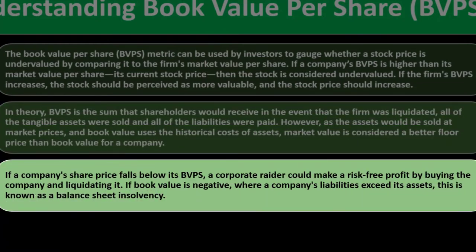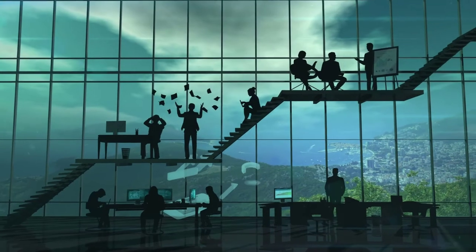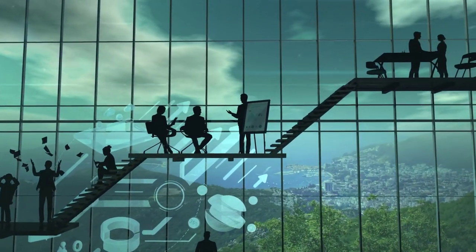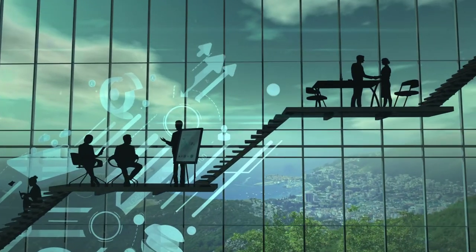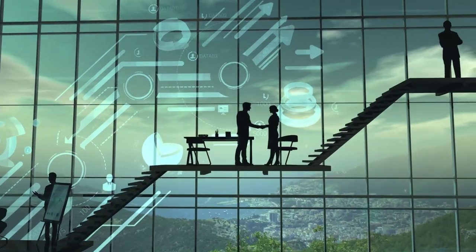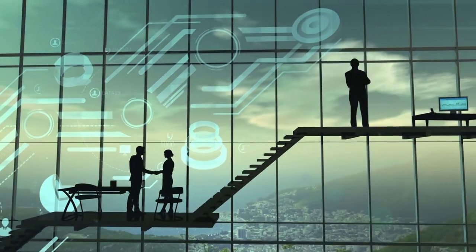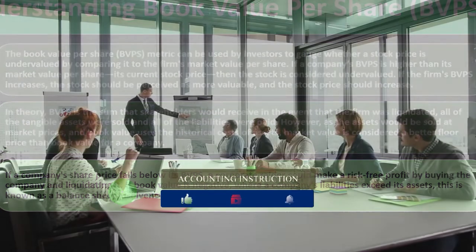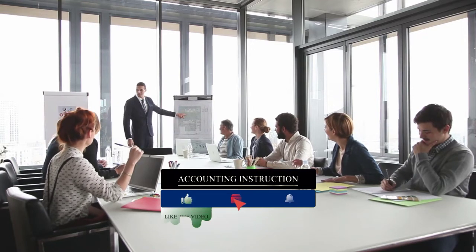So if a company's share price falls below its book value per share, a corporate raider could make a risk-free profit by buying the company and liquidating it. If a company has assets minus liabilities worth more than what you paid for the stock, you could buy the company, sell all the assets, pay off the liabilities, and make money just doing that. You would therefore expect the value of the stock to be higher than assets minus liabilities.